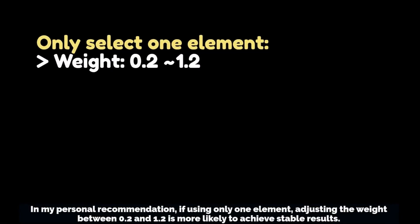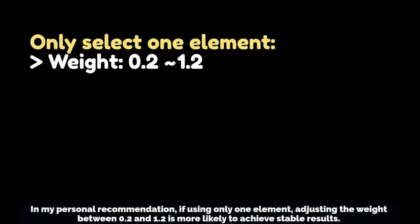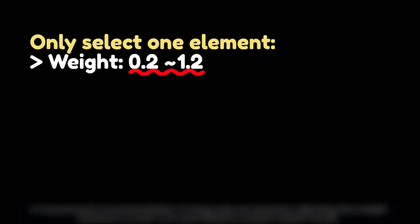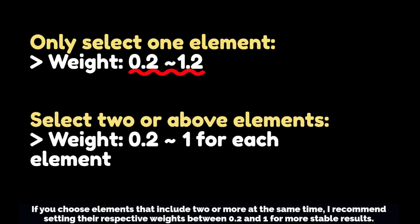In my personal recommendation, if using only one element, adjusting the weight between 0.2 and 1.2 is more likely to achieve stable results. If you choose two or more elements at the same time, I recommend setting their respective weights between 0.2 and 1 for more stable results.